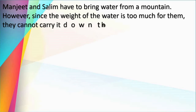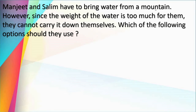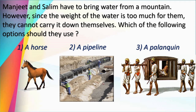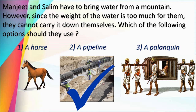Question: Manjeet and Salim have to bring water from a mountain. However, since the weight of the water is too much for them, it is not possible to carry the water from the mountain to the ground. Which option should they use — a horse, a pipeline, or a palki? A pipeline is best for this problem.